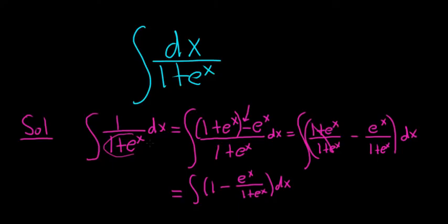You'll notice you can't make a u sub at the beginning, by the way, because if you let u be the bottom, du is e to the x, and it's nowhere to be found in the numerator. So this is one way to approach it.